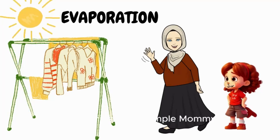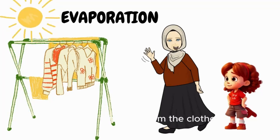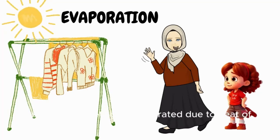Interesting! Show me some examples, Mommy. When we are drying clothes under the sun, water is removed from the clothes as water droplets get evaporated due to the heat of the sun.